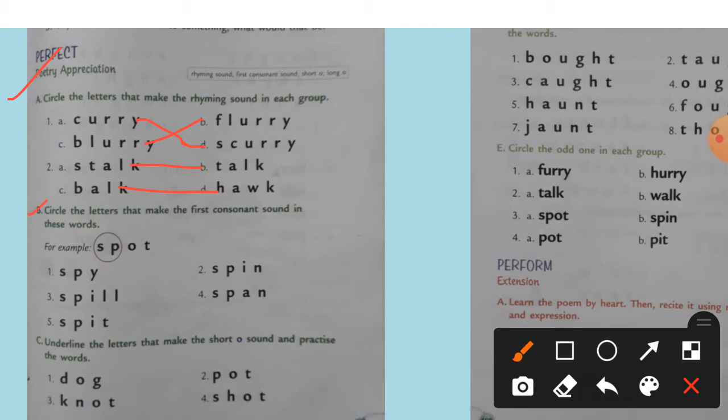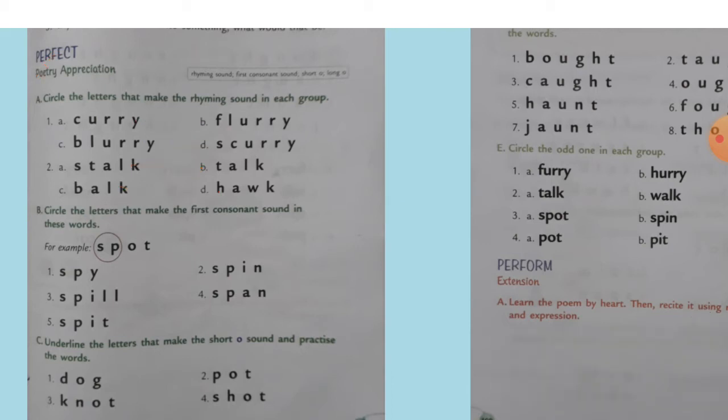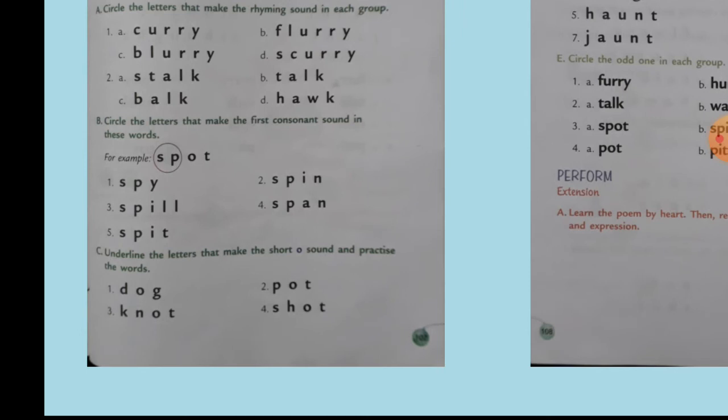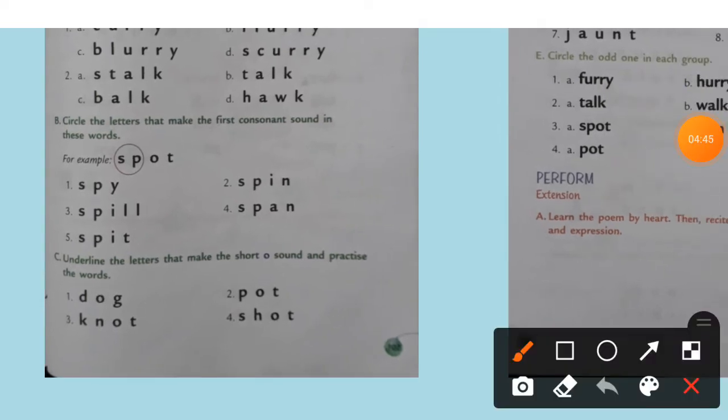B. Circle the letters that make the first consonant sound in these words. Spot, so circle S-P. Spy, S-P. Spill, S-P. Split, S-P. Span, S-P.